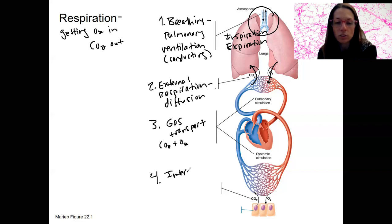Internal respiration. This is also going to be diffusion. And you can see it there in the picture to my right. Oxygen is traveling from the blood to the tissues. Carbon dioxide is diffusing from the tissues to the blood.